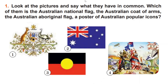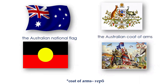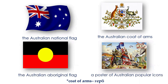Let's check. This is the Australian national flag. The second picture is the Australian coat of arms, then the Australian Aboriginal flag, and a poster of Australian popular icons is the last one. The coat of arms means 'herb'.